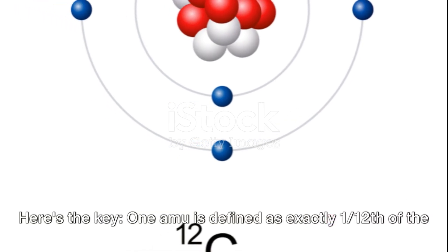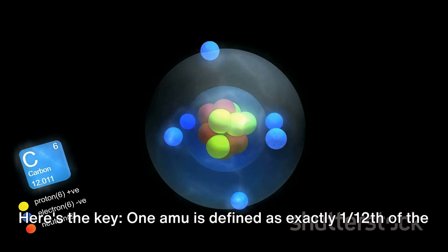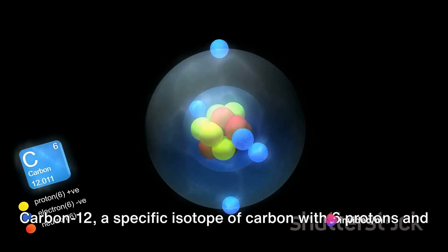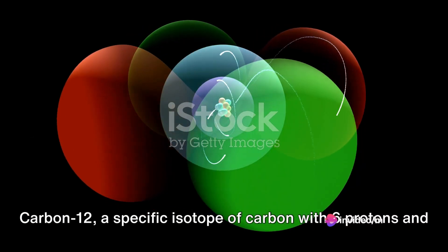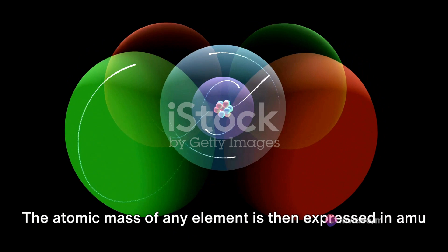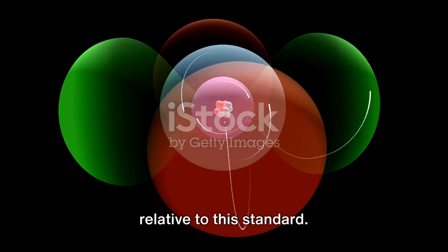Here's the key. One amu is defined as exactly one twelfth of the mass of a carbon-12 atom. Carbon-12, a specific isotope of carbon with six protons and six neutrons, is the reference point. The atomic mass of any element is then expressed in amu relative to this standard.